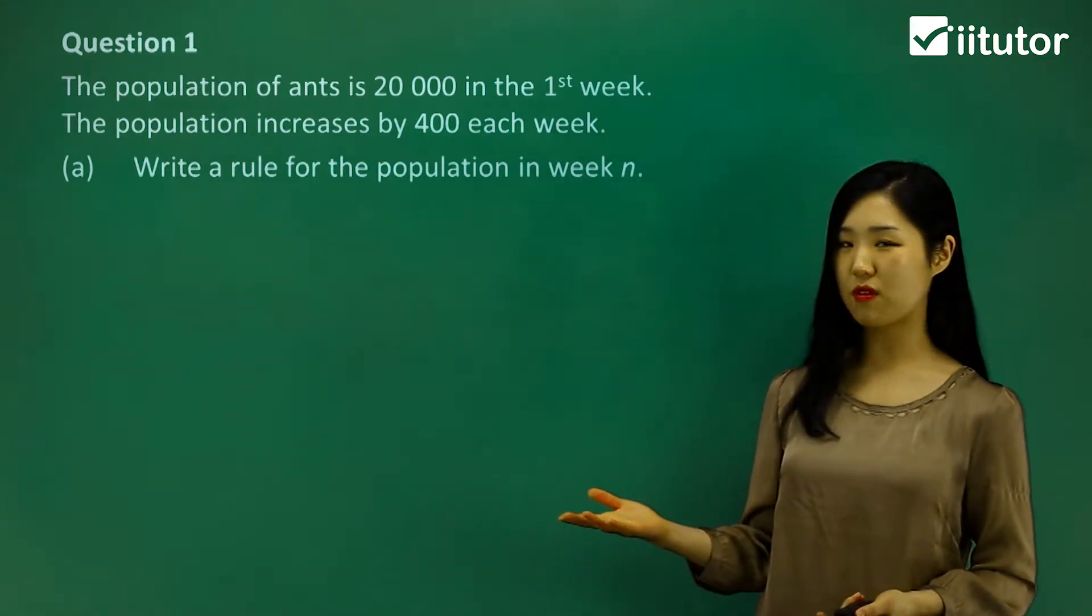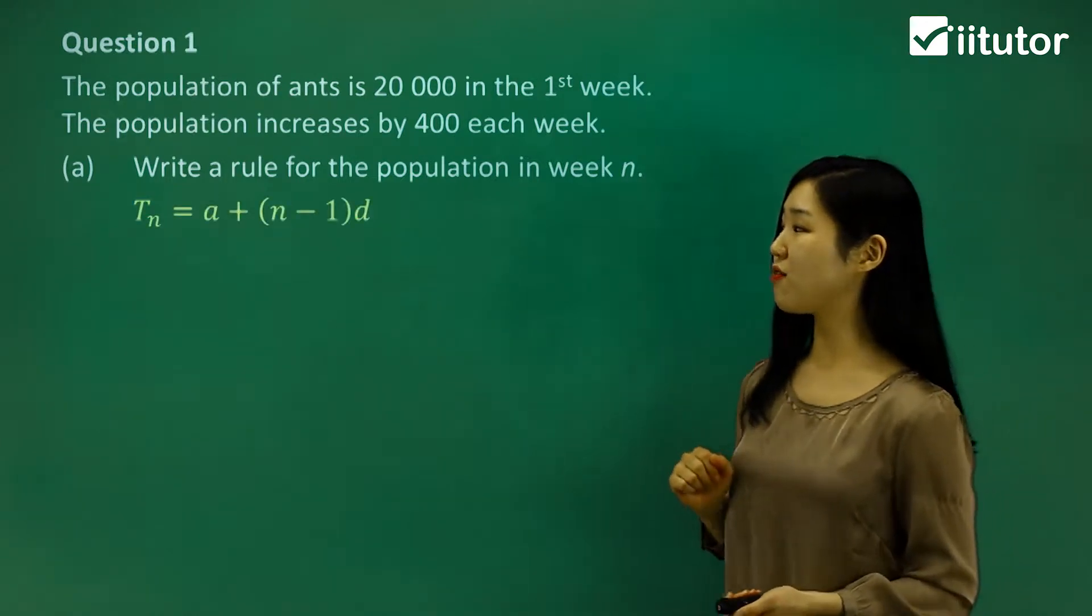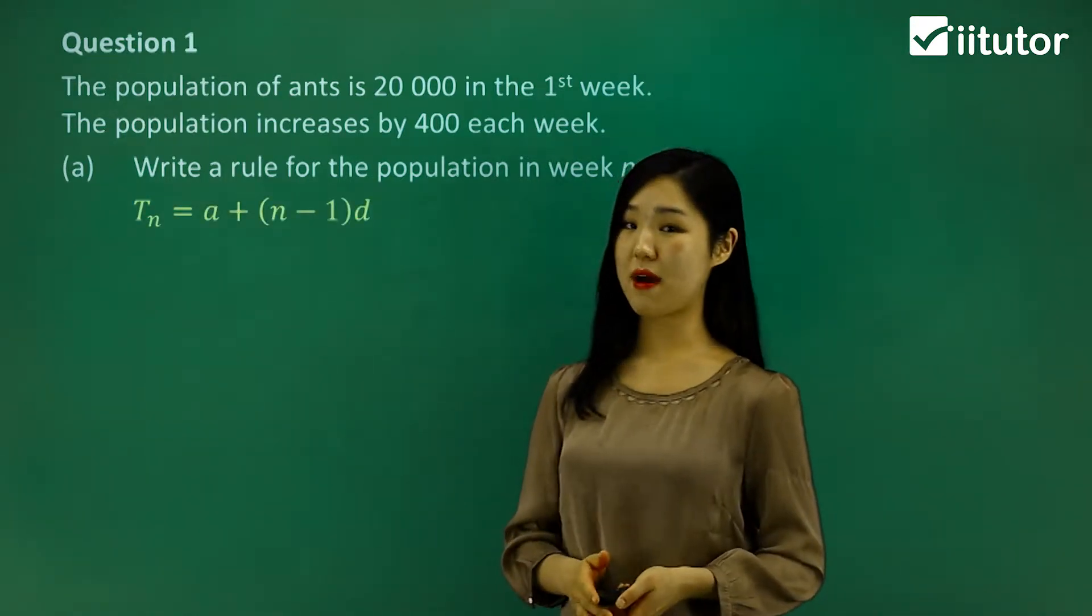That links to the common difference, which is 400. So we're going to use our formula: tn equals a plus (n minus 1)d.